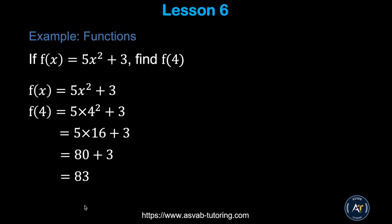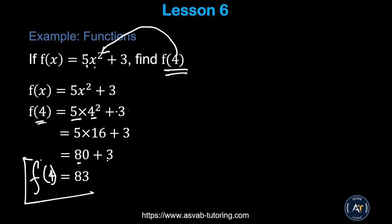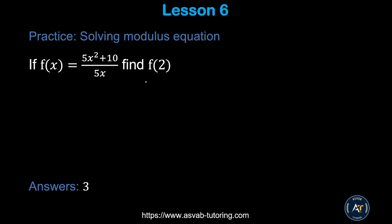Finally, we'll cover basic functions. A function means: for every x value given, you find exactly one y value. For f(x) = 5x² + 3, find f(4): substitute x = 4, giving f(4) = 5(4²) + 3 = 5(16) + 3 = 80 + 3 = 81. Now try the practice problem the same way and confirm that f(2) = 3.